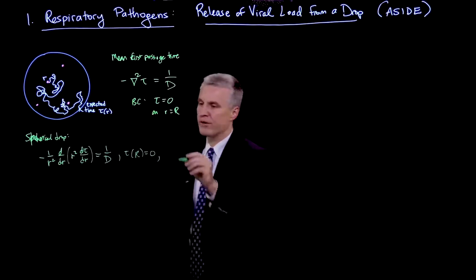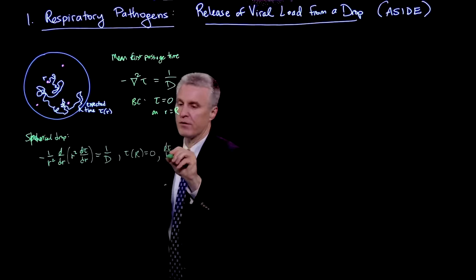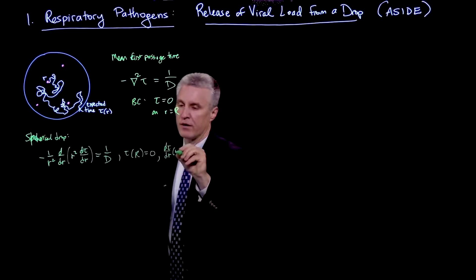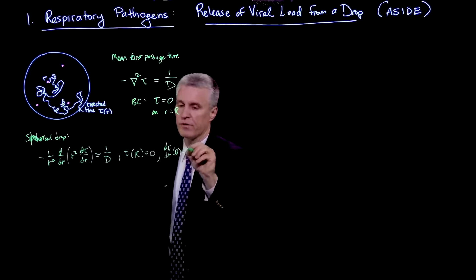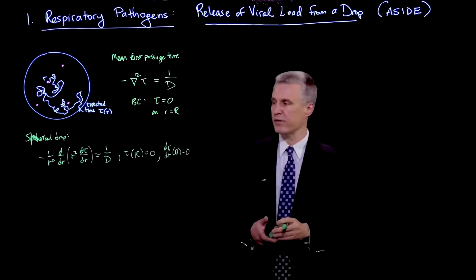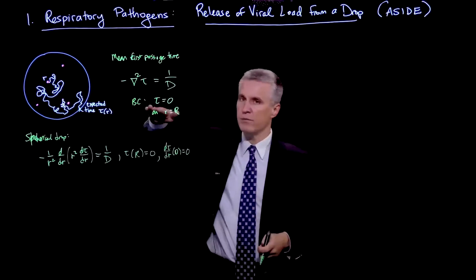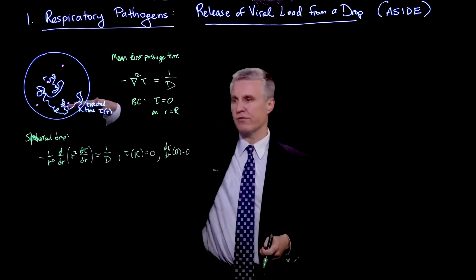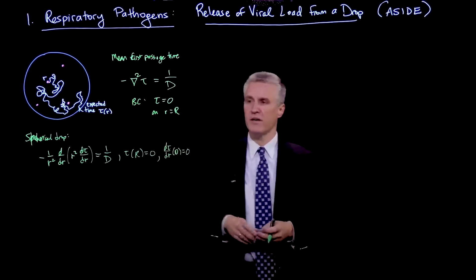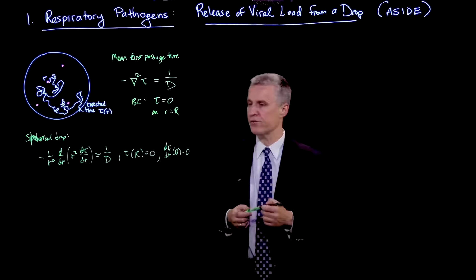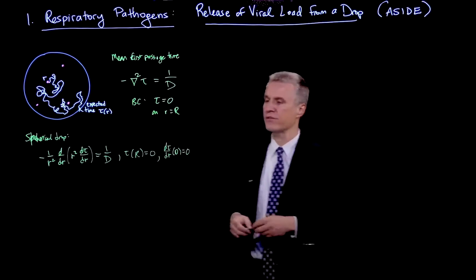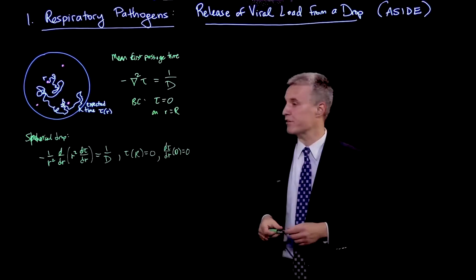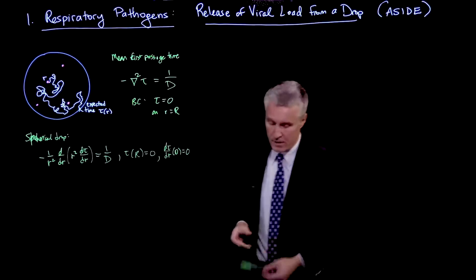Another boundary condition we might mention is that d tau dr at r equals 0 is 0. That's a symmetry boundary condition. So when you're right in the middle, there's no favored direction for the diffusion process. And so therefore, the derivative of this time with respect to R must be 0 at the center. That's a symmetry boundary condition.